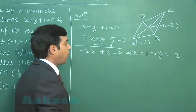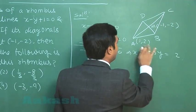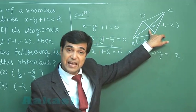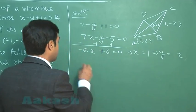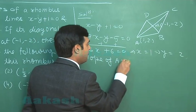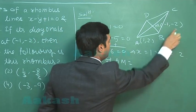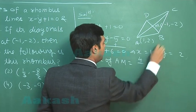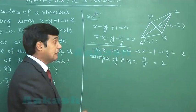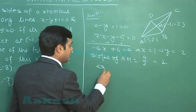So the coordinates of point A we obtain as (1, 2). Now we can talk about the slope of AM, that is the diagonal. Slope of AM is (2 + 2) upon (1 + 1), that is 4 upon 2, hence the slope is 2. Therefore equation of BD...